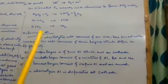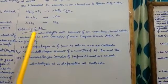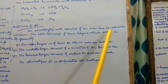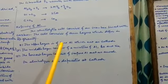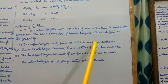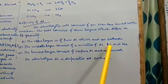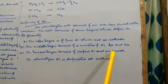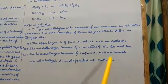Now final step is refining of aluminum, that is purification. The electrolytic cell consists of an iron box lined with carbon. The cell consists of three layers which differ in specific gravity. The upper layer is of pure aluminum which acts as cathode. The middle layer consists of mixture of aluminum, barium, and sodium fluoride. And the lowest layer consists of impure aluminum acting as anode. On electrolysis, aluminum is deposited at cathode. Thank you.